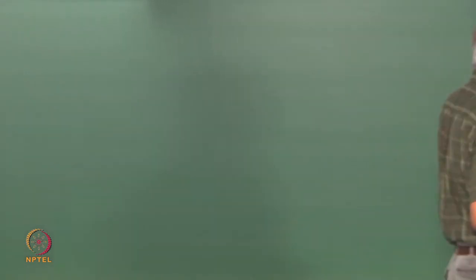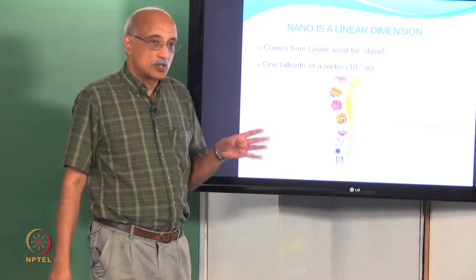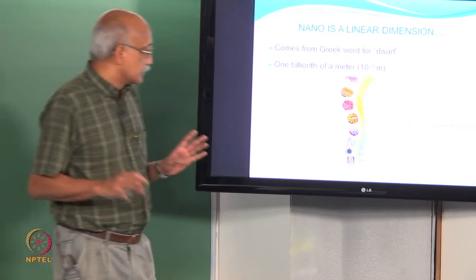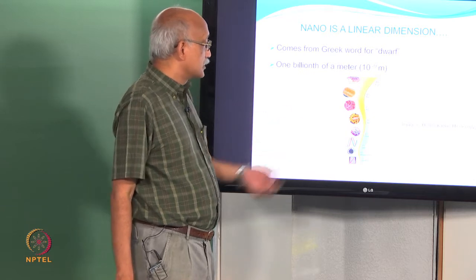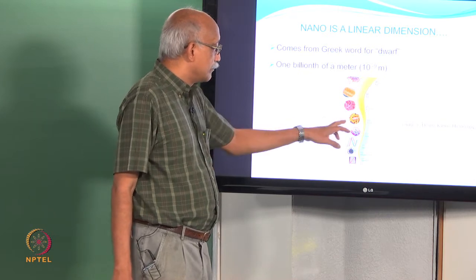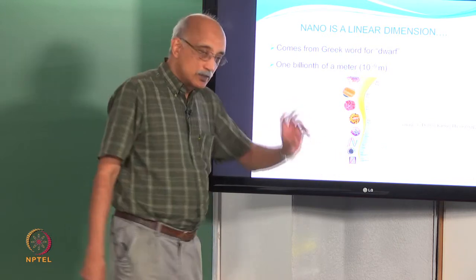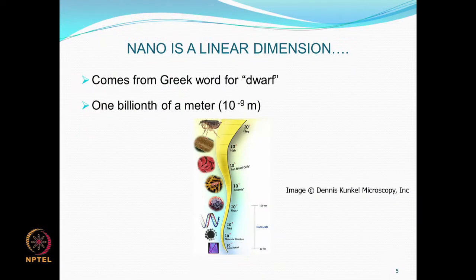The nano dimension starts at about 1 nanometer and goes up to about 100 nanometers. 1 to 100 nanometers is traditionally defined as the nano range. Things we are familiar with that are larger than that size — small insects, human hair, red blood cells, bacteria — are all above the nanoscale. Viruses, DNA, and molecular structures are in the nano scale. So nano is very, very small.